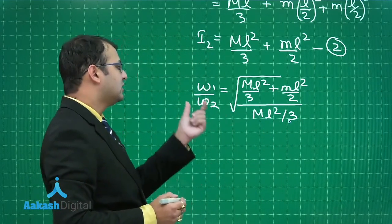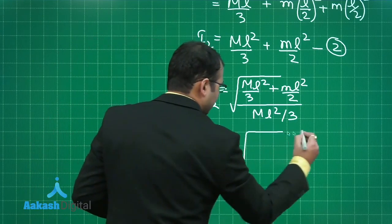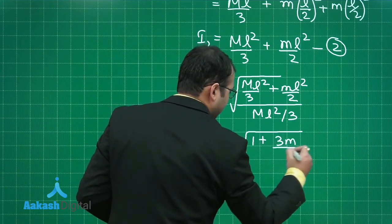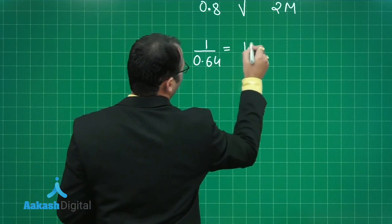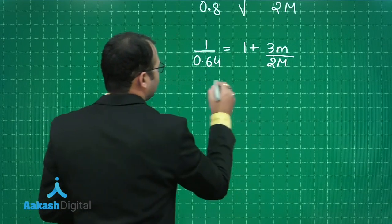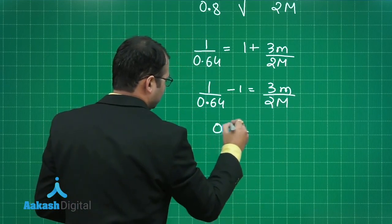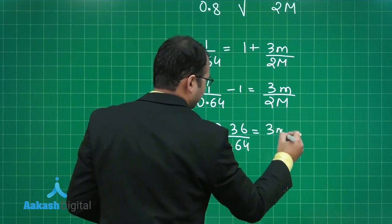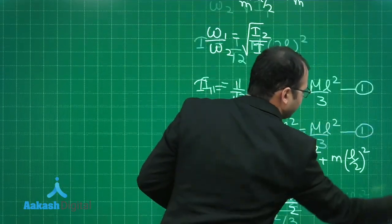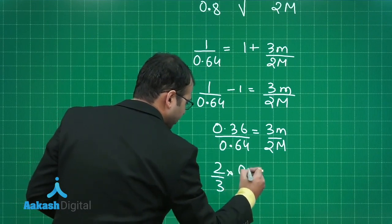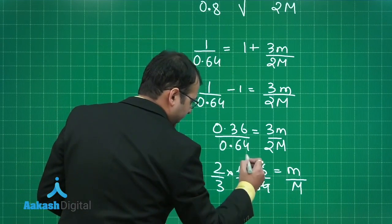It is given that after adding the masses the frequency reduces by 20%, so if initially it was 1 the new frequency is 0.8. Solving, you get 1 plus 3m/(2M) under the square root equals 1/0.8. Squaring both sides: 1/0.64 equals 1 plus 3m/(2M). Rearranging: 1/0.64 minus 1 equals 3m/(2M), which gives 0.36/0.64 equals 3m/(2M). Solving for m/M: multiply both sides by 2/3 to get (2/3)(0.36/0.64) = m/M, which simplifies to 3/8.